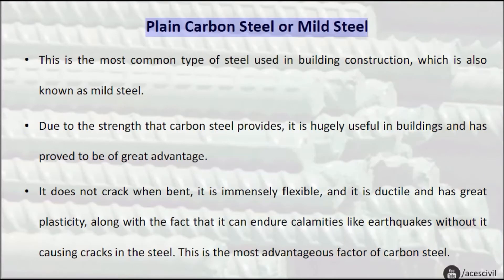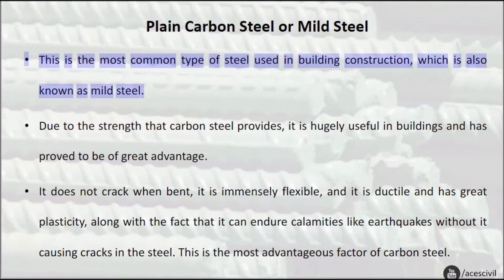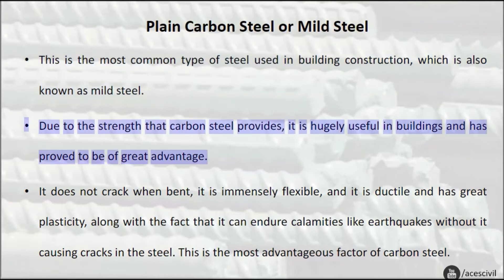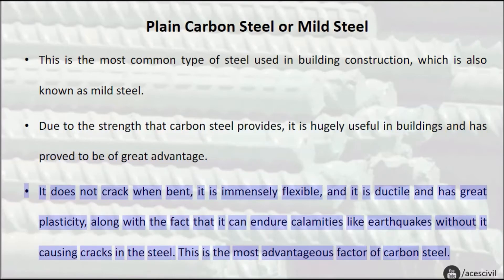Plain carbon steel or mild steel. This is the most common type of steel used in building construction, which is also known as mild steel. Due to the strength that carbon steel provides, it is hugely useful in buildings and has proved to be of great advantage. It does not crack when bent, it is immensely flexible, and it is ductile and has great plasticity, along with the fact that it can endure calamities like earthquakes without causing cracks in the steel.